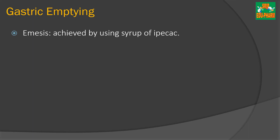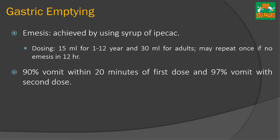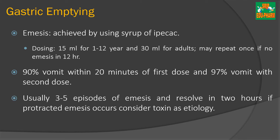Another method is gastric emptying. Emesis is induced in patients by using syrup of ipecac. The dose is 15 mL for children aged 1–12 years and 30 mL for adults, and it can be repeated if emesis does not occur within 20 minutes. Around 90% of patients vomit within 20 minutes of the first dose. Usually, 3–5 episodes of emesis are required, resolving within 2 hours. If protracted emesis occurs, consider the toxin itself as the etiology.